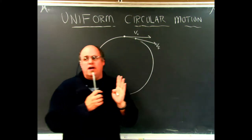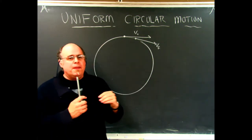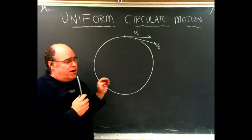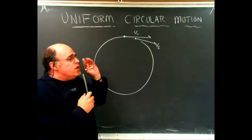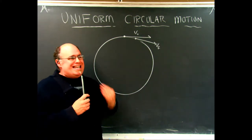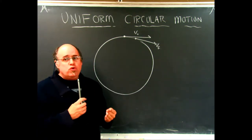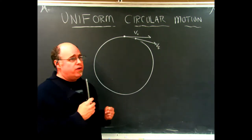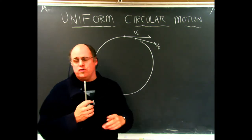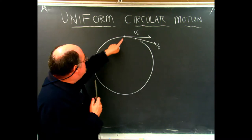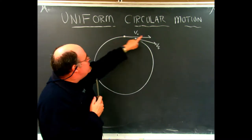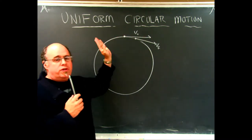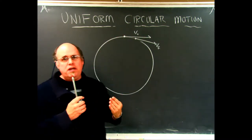Whenever we talk about velocity, if you were in a car going around a rotary, your speed would be tangent to the circle. A tangent is just one straight line touching the circle at one point. So this is basically a tangent line touching the circle at this point.